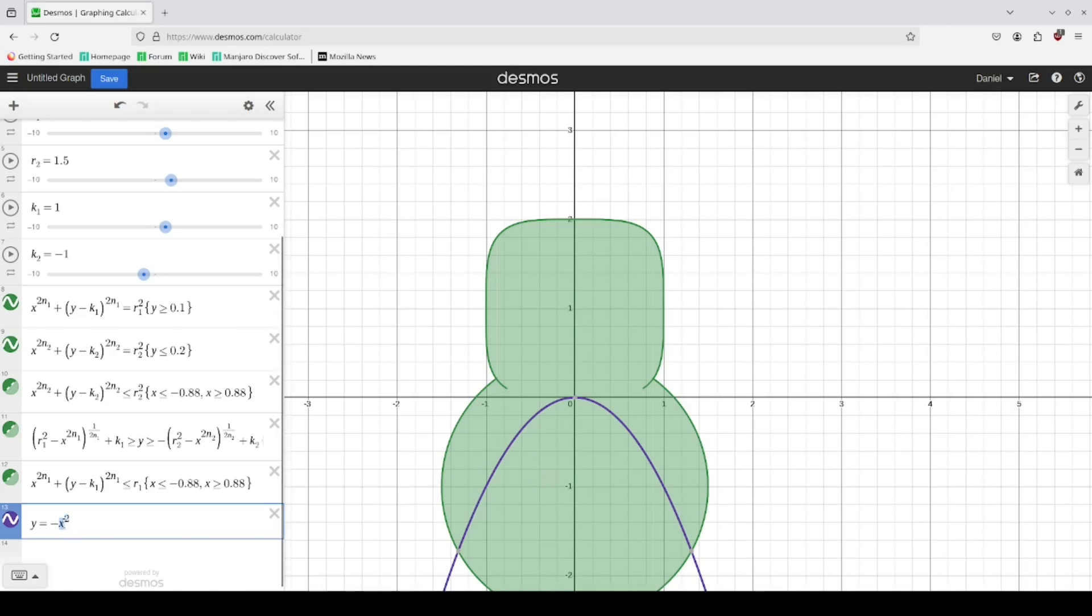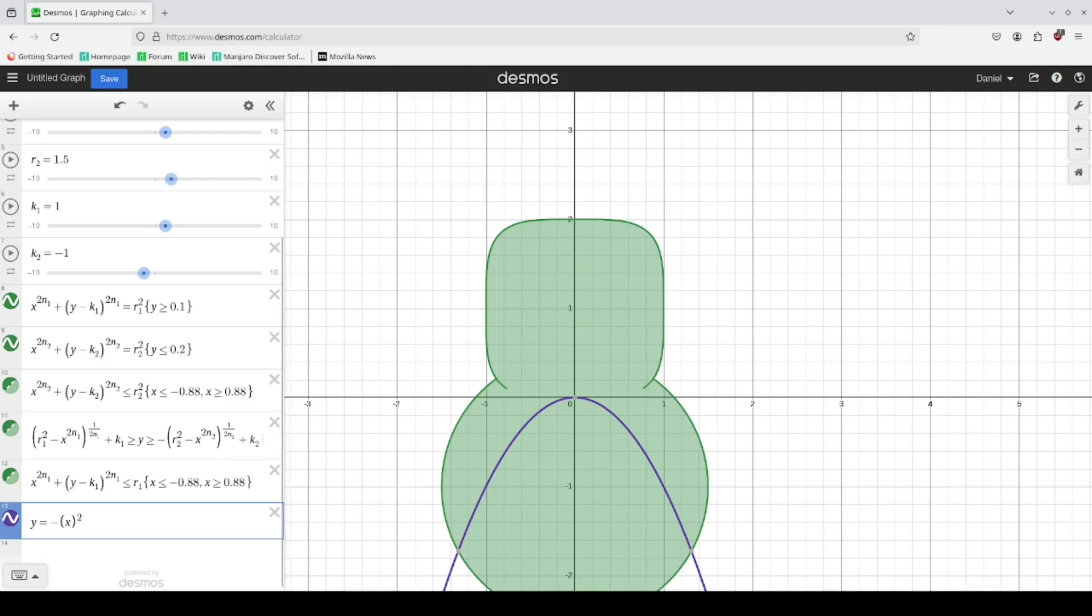We do the same process. You shift it over by however much you want. I want to move it to around about here, so that's half. Then we'll move it up to, call that three. We can move this. That was way too much.